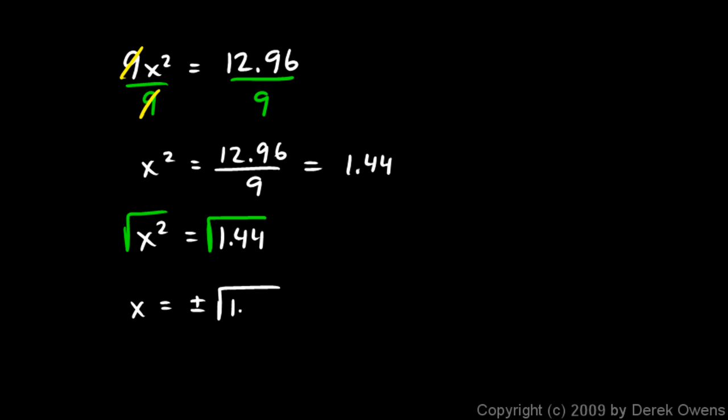So if I square root both sides, x is the square root of 1.44, or x is really plus or minus the square root of 1.44. You might be thinking, how do we simplify that?